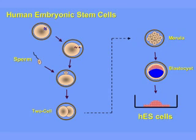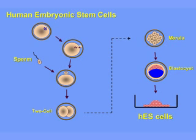Inside the blastocyst, there's a group of cells that are going to eventually become the embryo. Those cells have the potential to continually multiply and reproduce their genes in the laboratory. This is termed a line of stem cells, which can continually renew themselves and maintain their potential to become any cell in the body.